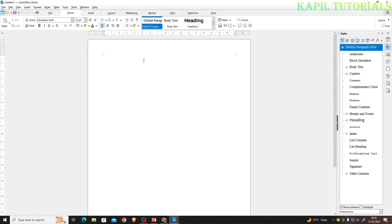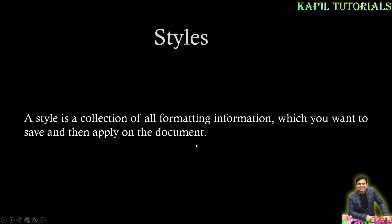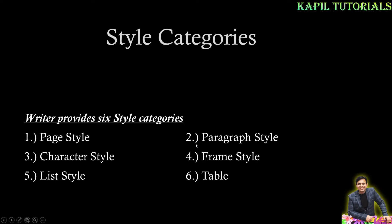We'll be covering each and every style one by one. The definition has already been explained. Now for style categories — LibreOffice provides six style categories: first is page style, second is paragraph style, third is character style, fourth is frame style, fifth is list style, and sixth is table style.